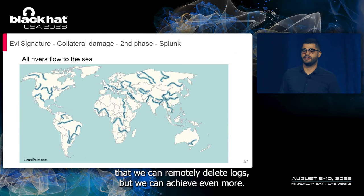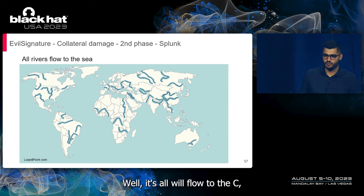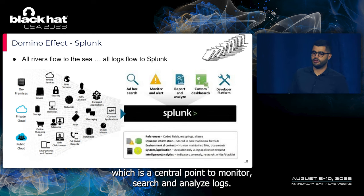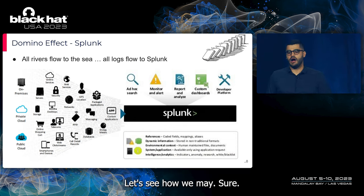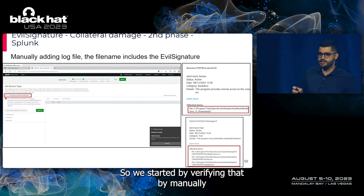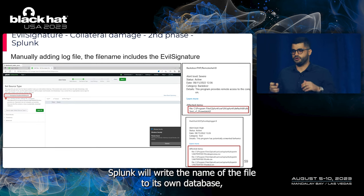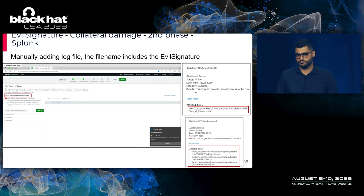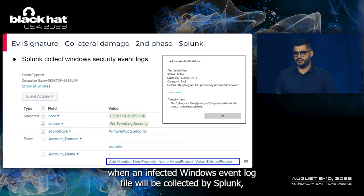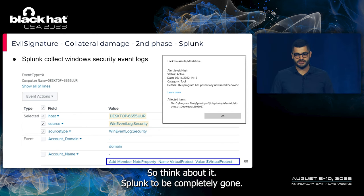In enterprises, all logs flow to a central database — for example Splunk, which is a central point to monitor, search, and analyze logs. By manually adding a log file with a name that includes an evil signature, Splunk writes that name to its own database, causing Defender to delete the entire Splunk DB. The same can happen automatically as a domino effect: when an infected Windows event log file is collected by Splunk, it gets added to Splunk's DB, again causing Defender to delete it. Splunk DB completely gone.